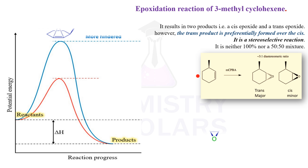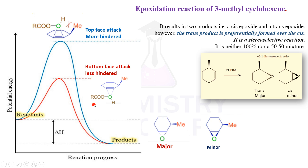For example, epoxidation of 3-methylcyclohexene — there are two possibilities of attack or formation of an epoxide. One is the top-face attack, which is more hindered because of the methyl group, so the epoxide formed on the same side has steric hindrance, making it less stable and higher in energy. If it attacks from the opposite side of the methyl group, there is less steric hindrance, less energy, more stable. That is why the less hindered attack gives the major product and the same-side attack gives the minor product.